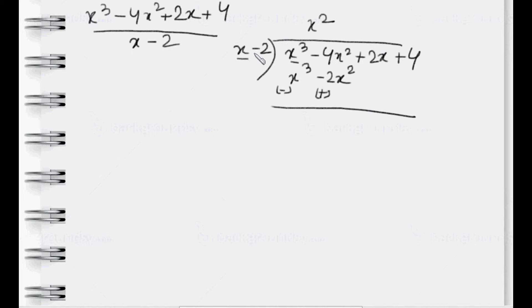Now we subtract. We know when we subtract, the sign of the second number changes. So we change the sign here. x³ - x³ is equal to 0. -4x² + 2x² is equal to -2x². And we bring down the rest of the polynomial.